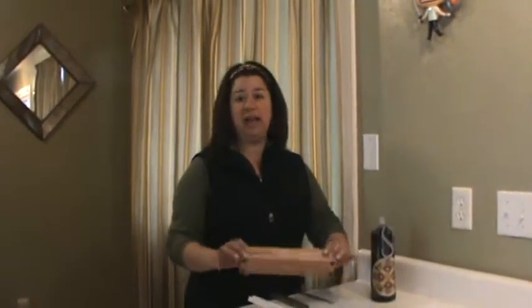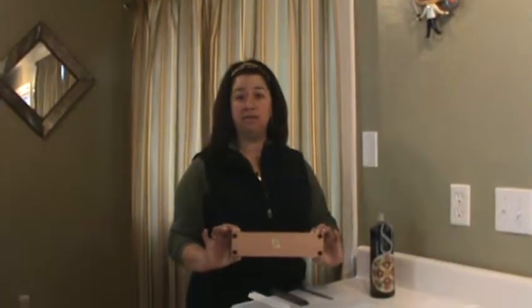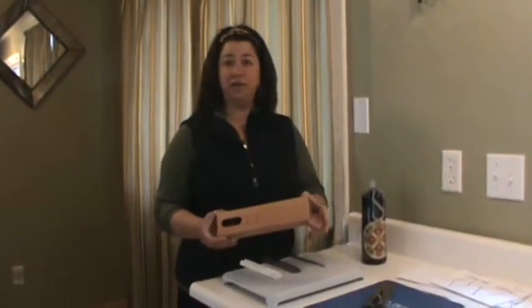When you receive your sharpener in the mail, it's going to come with different components. The first component is the block. The block is solid oak and it has four rubber soles on the base and grooves for your fingers.